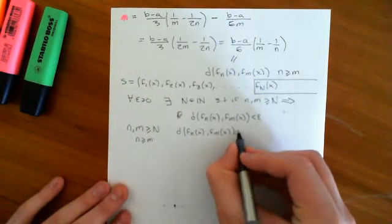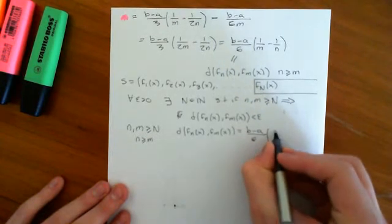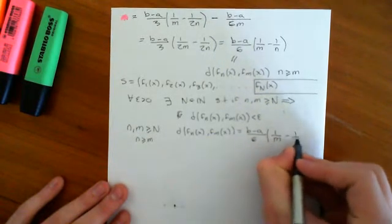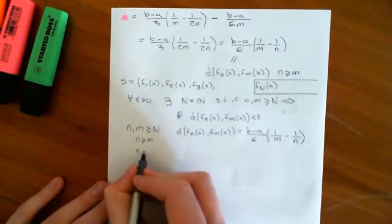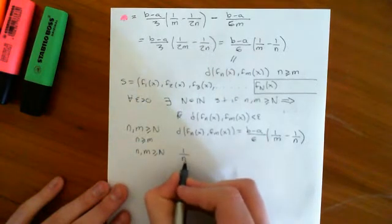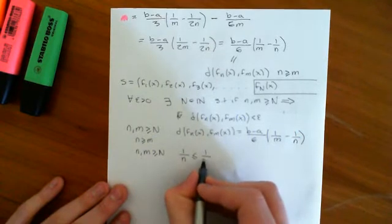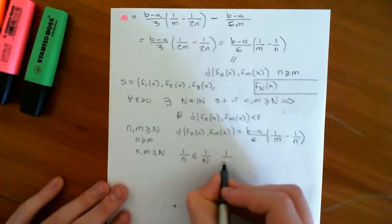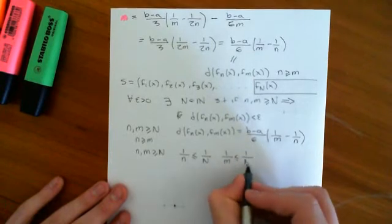This distance between them is going to equal B minus A over 6, 1 over m minus 1 over n. Now, if both little n and little m are greater than or equal to big N, then it implies that 1 over little n is less than or equal to 1 over big N, and that 1 over little m is less than or equal to 1 over big N.